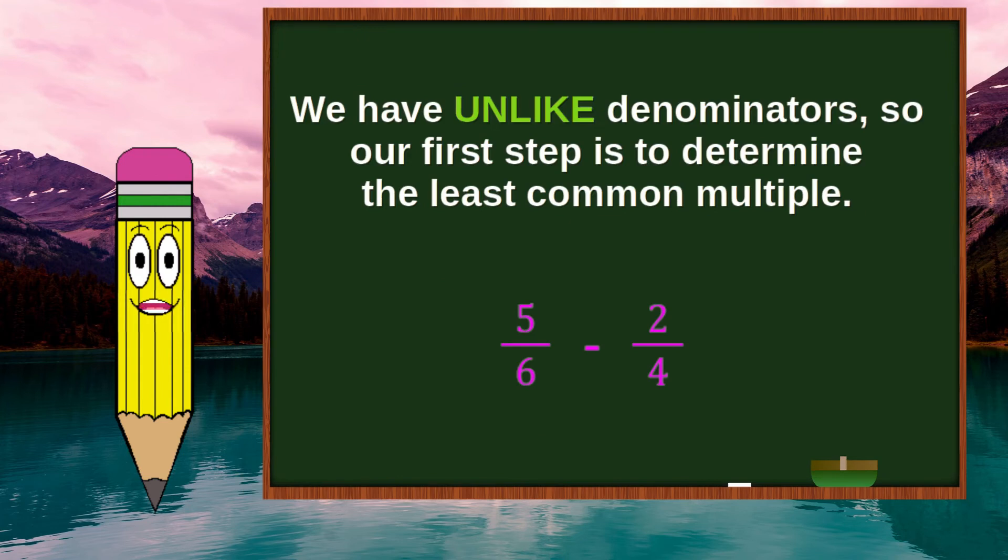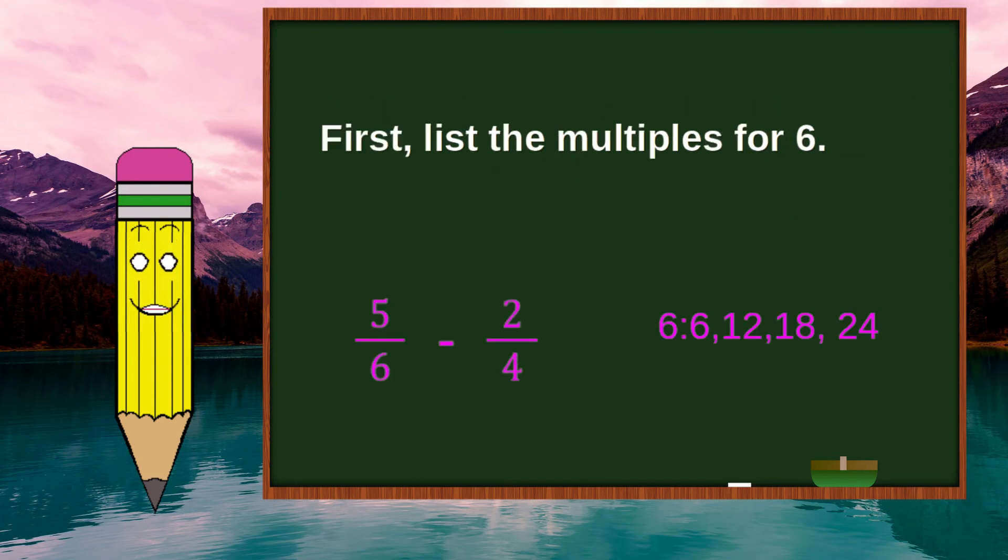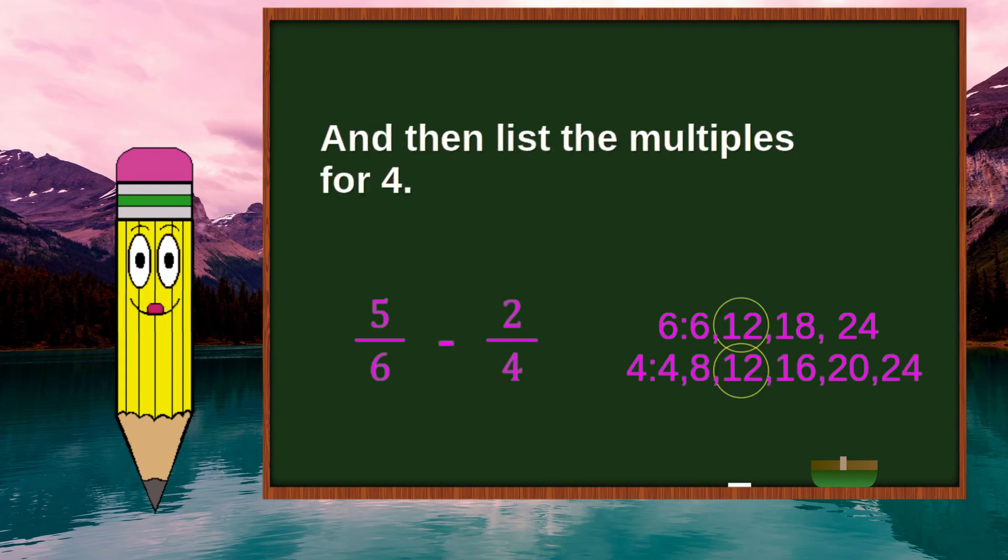We have unlike denominators, so our first step is to determine the least common multiple. First, list the multiples for 6: 6, 12, 18, and 24.